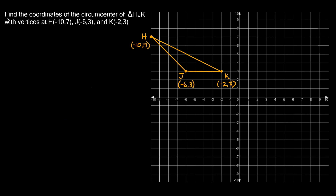The problem says: find the coordinates of the circumcenter of triangle H, J, K with vertices at H(−10, 7), J(−6, 3), and K(−2, 3). The first thing we have to do is graph the triangle, which I've already done here.